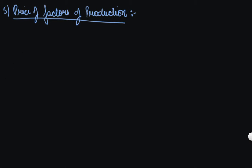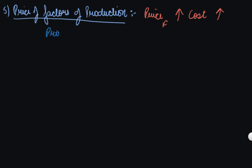The fifth point is the price of factors of production. Factors of production include land, labor, capital, entrepreneur, raw material, and other factor inputs. If the price of factors of production increases, your cost will increase. If the market price remains constant but your cost increases, you are still selling at the previous price, so your profit will be lower and the producer will be willing to sell less.